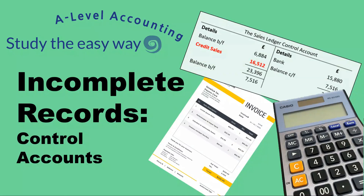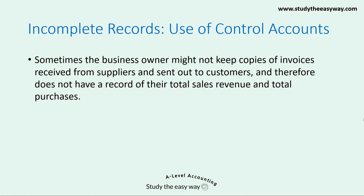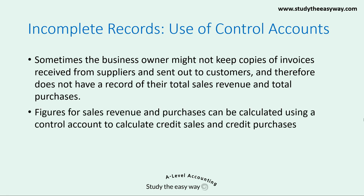In this Incomplete Records topic video, we'll be looking at the use of control accounts. In Incomplete Records questions, you're required to calculate missing figures. For example, sometimes the business owner might not keep copies of invoices received from suppliers and sent out to customers, and therefore doesn't have a record of their total sales revenue and total purchases. Figures for sales revenue and purchases can be calculated using a control account — credit sales from a sales ledger control account, and credit purchases from a purchase ledger control account.